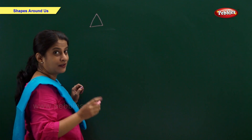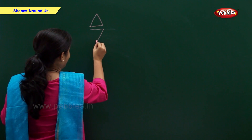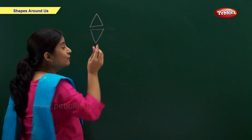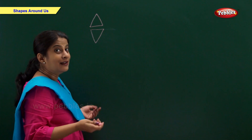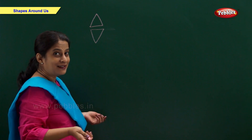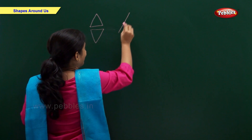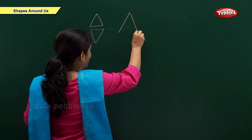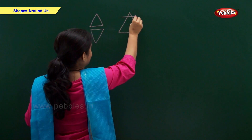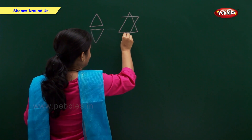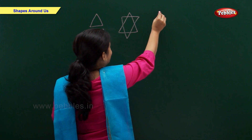Now let's draw a star. I have a triangle here, and there is one more triangle. Now let's overlap these triangles and make a star. Star.